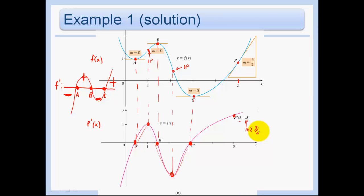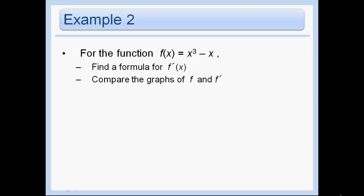That's just what we're doing in graphing the graph of f prime — we're just graphing the slopes. For this function, find f prime and then compare the graphs of f and f prime. We don't need to do it the long way since we know our power rules, so we can just find the derivative quite easily.